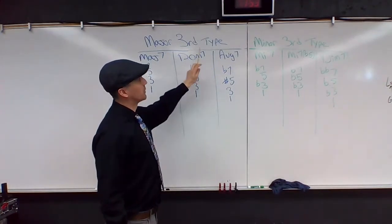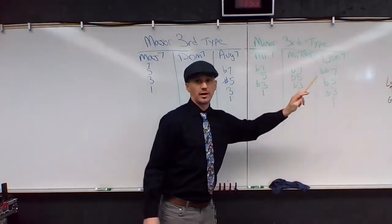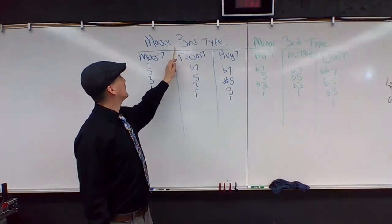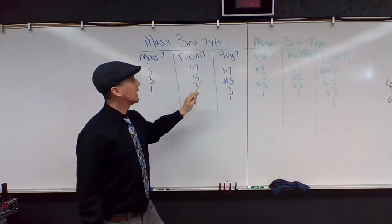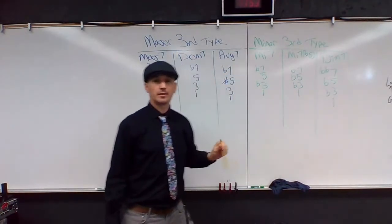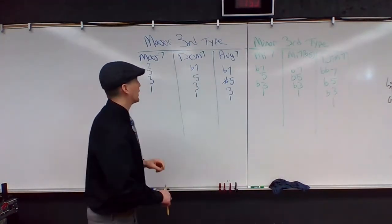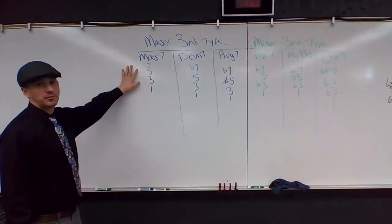So we have major third type, and then minor third type. So ones that have a three and ones that have a flat three. There are three major third type, three minor third type. Let's go through the major third type first.